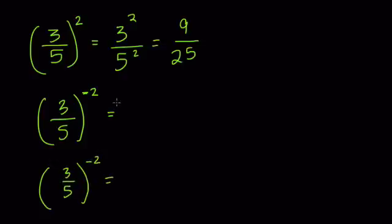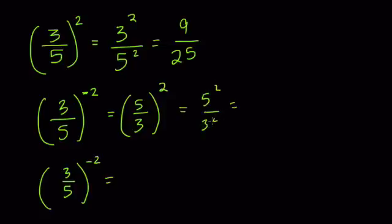So in the first case, let's flip it first. And now, instead of negative 2, we just have 2. Once you flip it, you've applied the negative part of the exponent, and then you square both parts. So 5 squared over 3 squared, which is 25 over 9. And that's the answer.